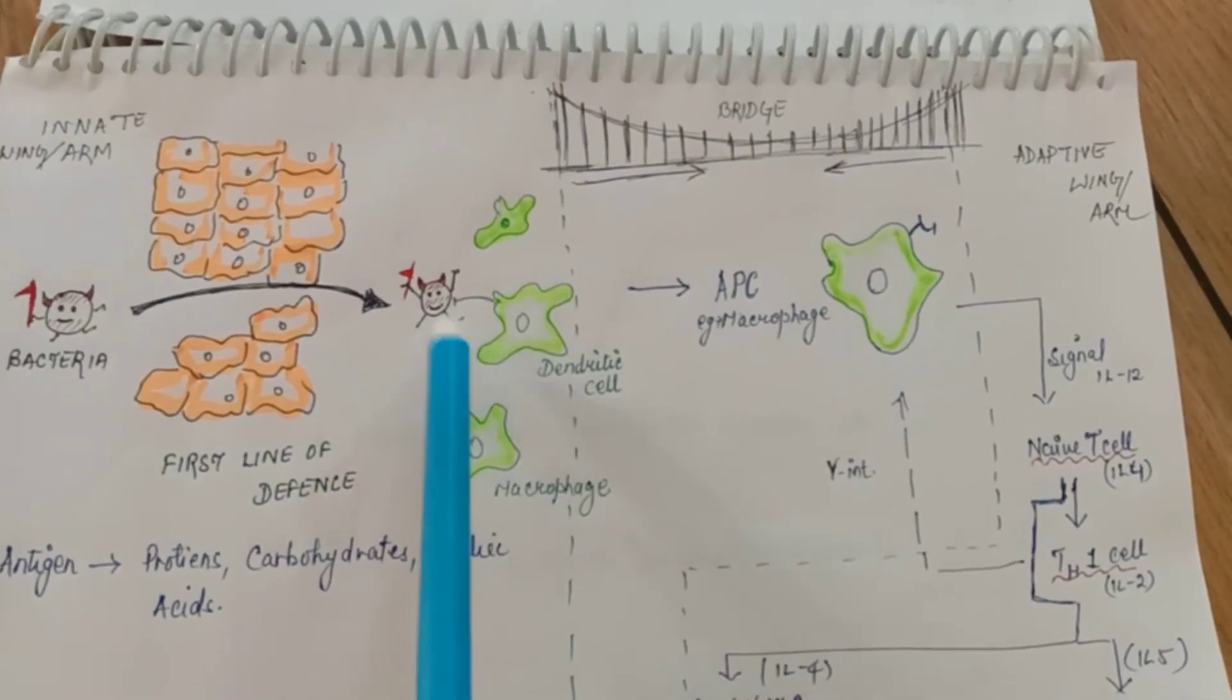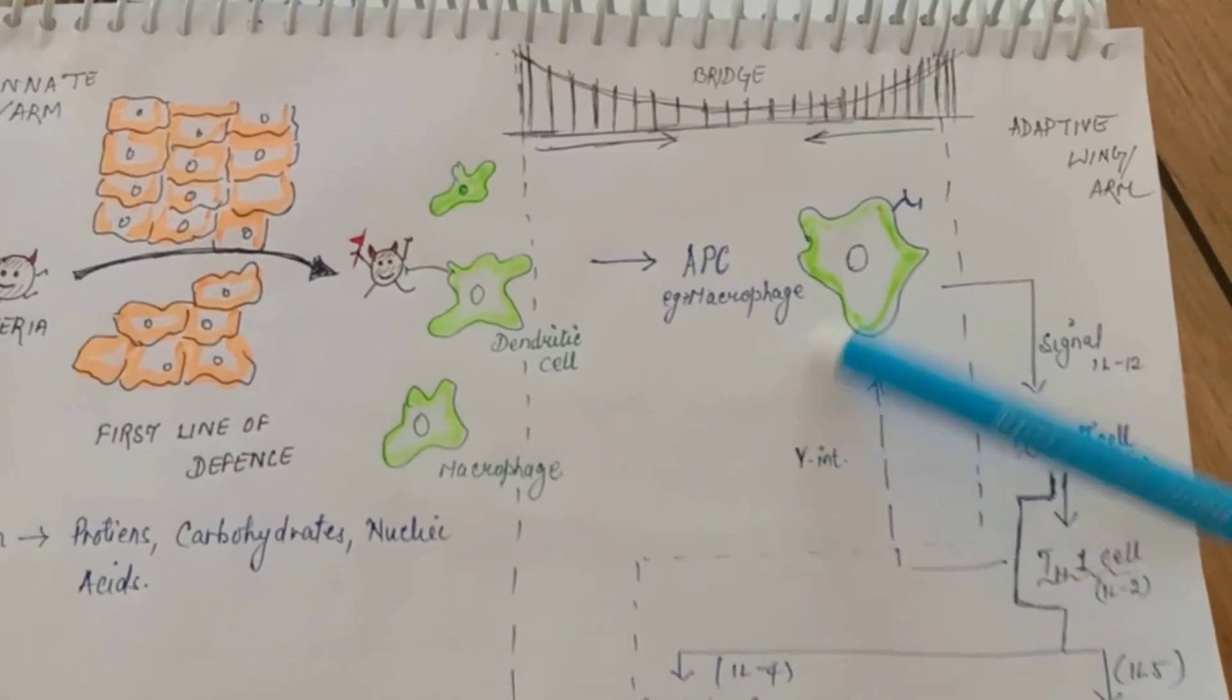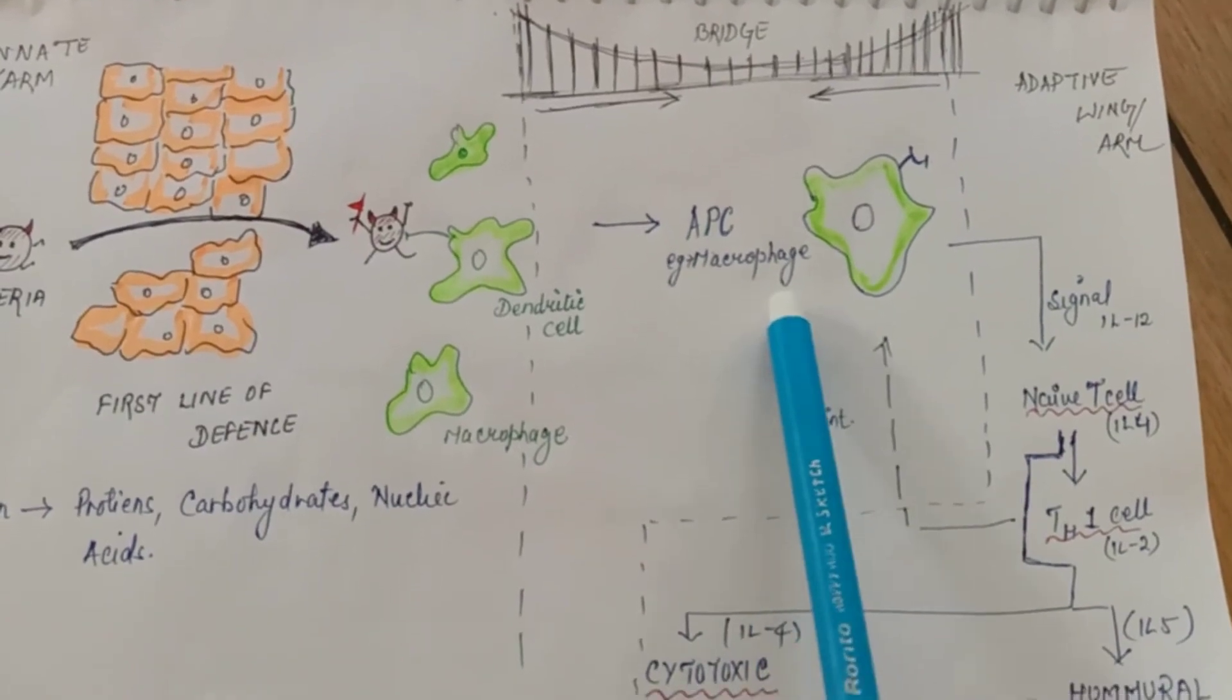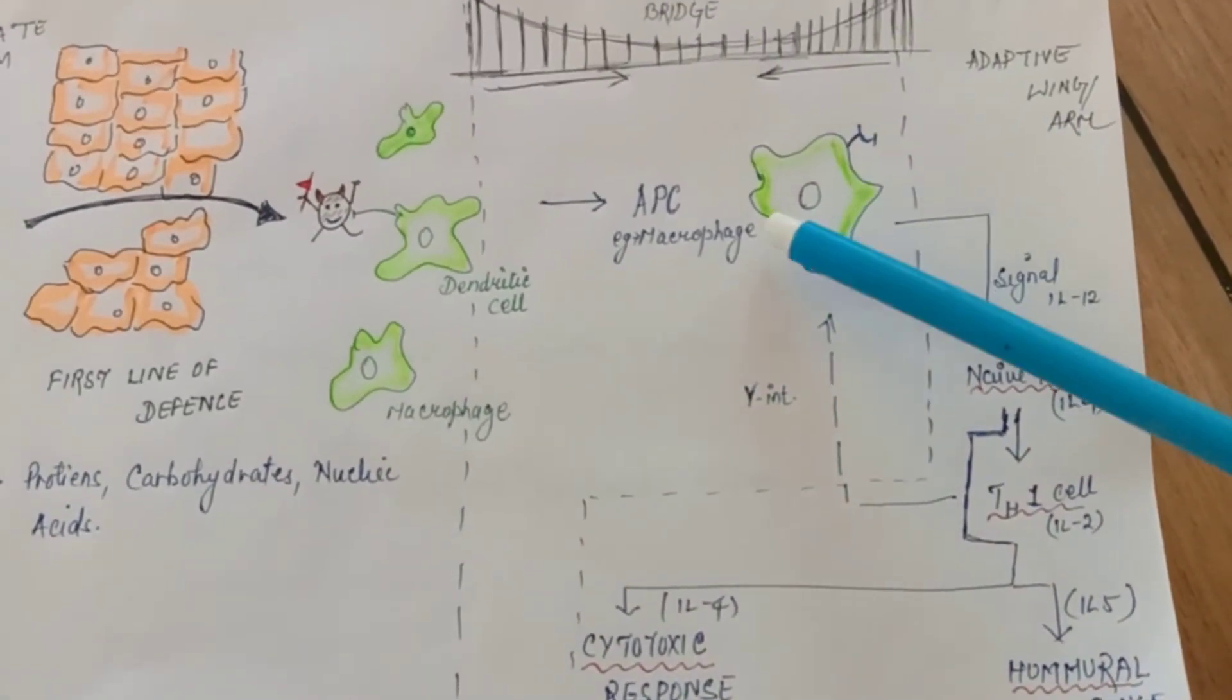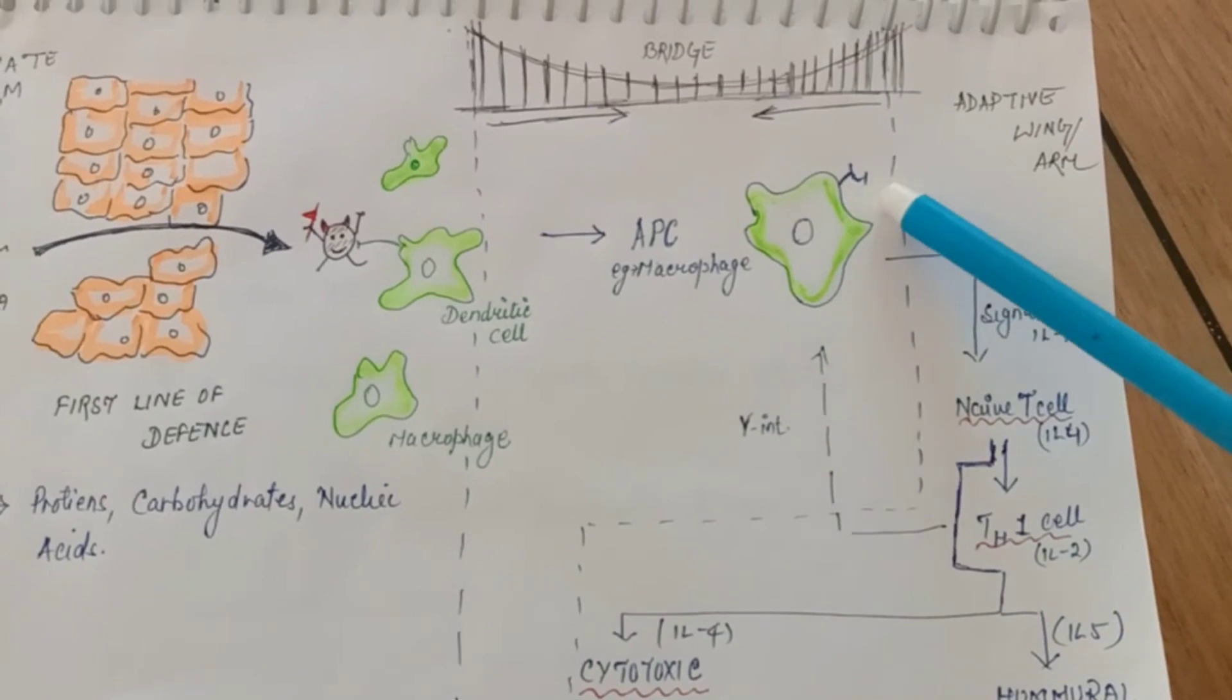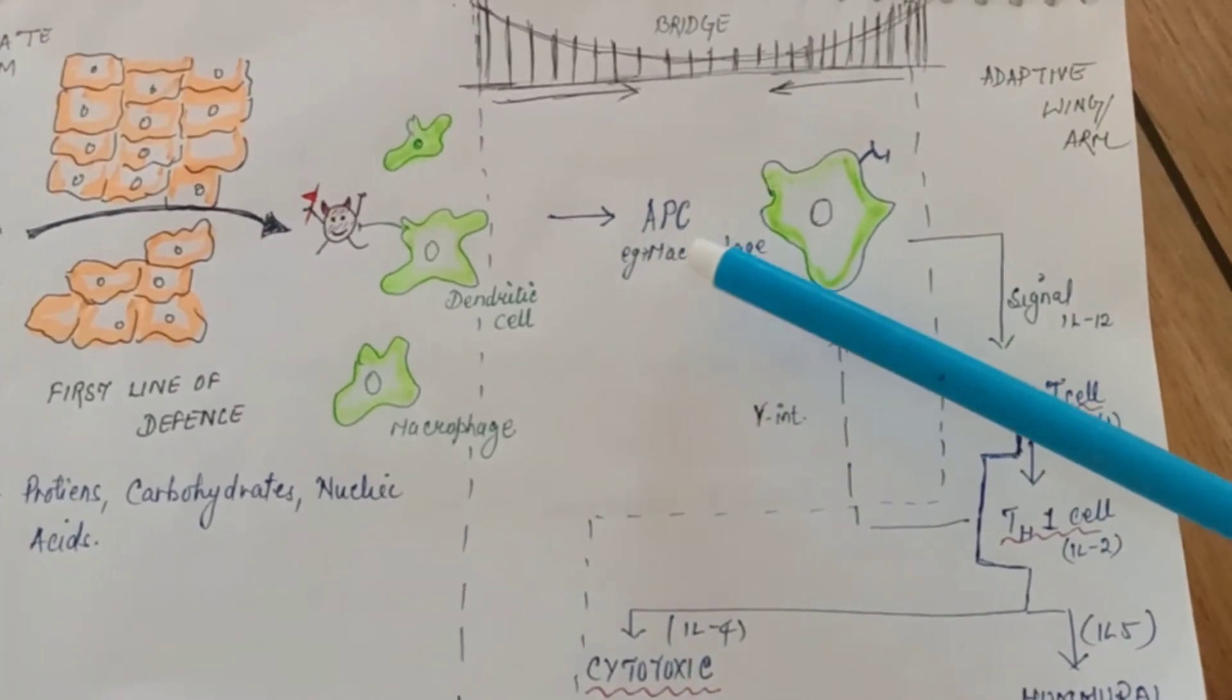Some part of bacteria will be caught up by antigen presenting cells like macrophage. Then what would happen, this is the classic pathway. Part of the bacteria, maybe some carbohydrate part or protein part or anything, will be presented here as the name suggests antigen presenting cell. They are the presenters, they'll just present.